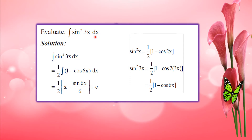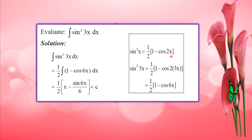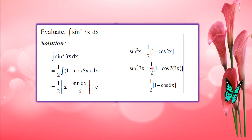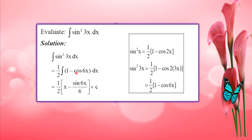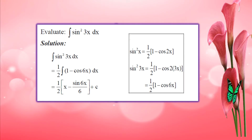For integral of sin squared 3x: we use the trigonometric identity sin squared x equals 1 by 2 into 1 minus cos 2x. So sin squared 3x becomes 1 by 2 into 1 minus cos 6x. Integrating gives x by 2 minus sin 6x divided by 12, plus c.